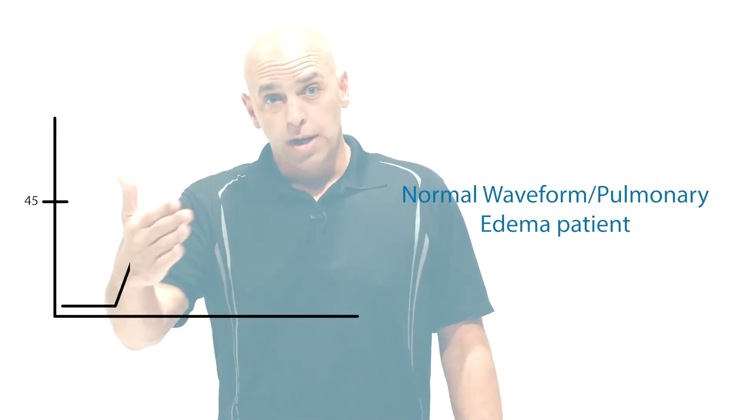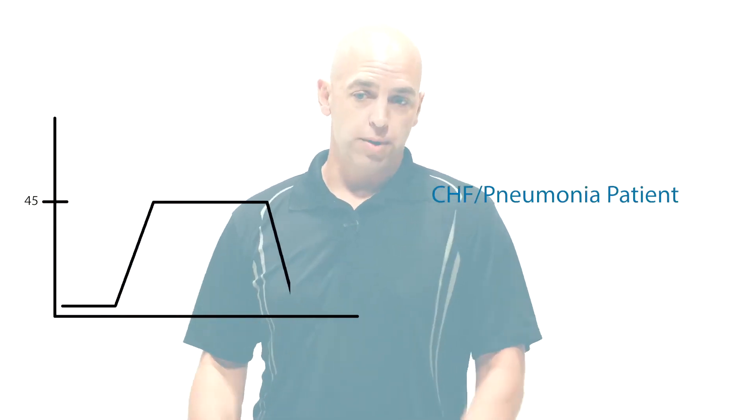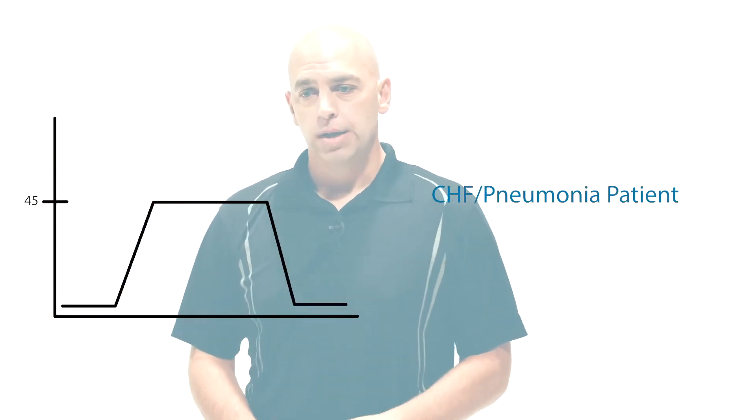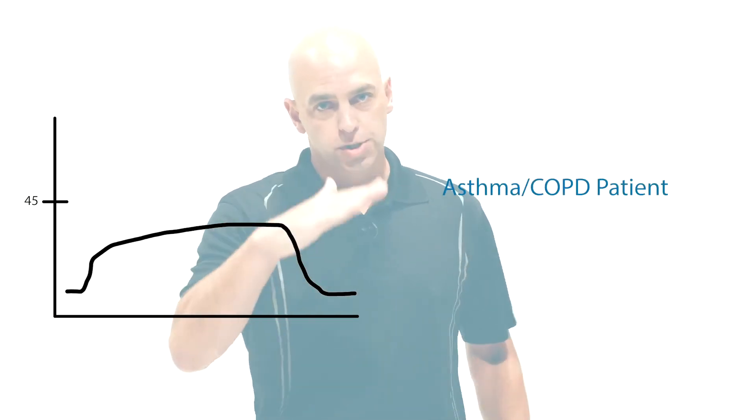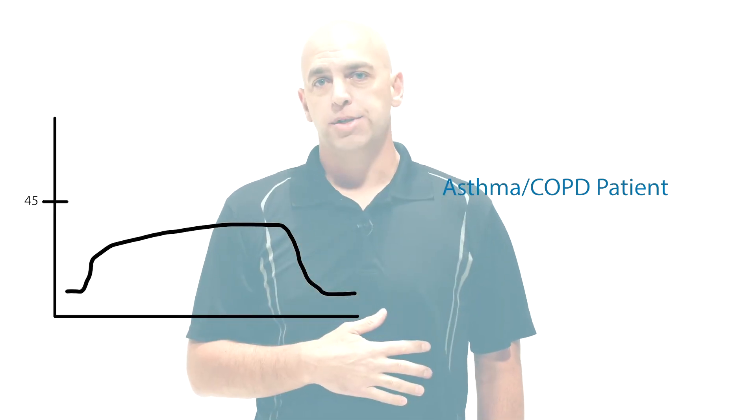Pulmonary edema does not cause a slope — there's no obstruction of flow with pulmonary edema because CO2 is so soluble in water; it diffuses through fluid at the exact same rate it does through air. And there are no shark fins from infections because there's usually a path of least resistance out the lungs to the sensor on the lips. So if I have a prolonged expiratory phase patient with a flat top, I instantly know it's probably CHF or pneumonia. If I have a prolonged expiratory phase with a slope, I'm going down the obstruction of flow path — if they're on a cannula, I'm thinking asthma or COPD.